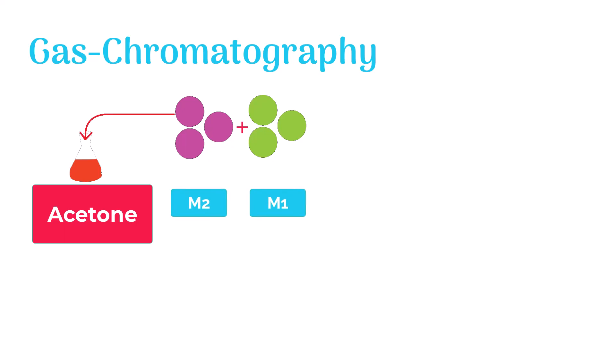Now let's mix a sample of M1 and M2 molecules with acetone. When we run chromatography, we get three peaks on the graph. First at time 1 minute, the second at time 3 minutes and the third at time 6 minutes.